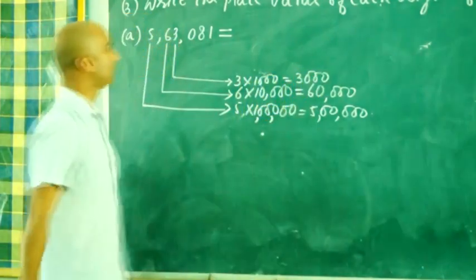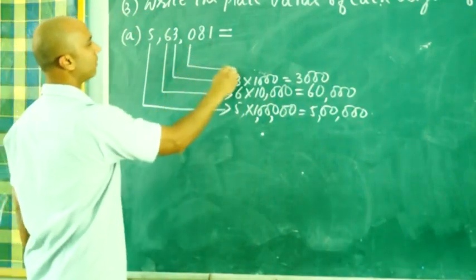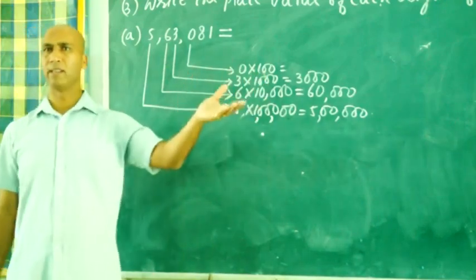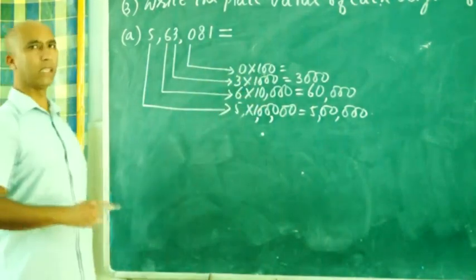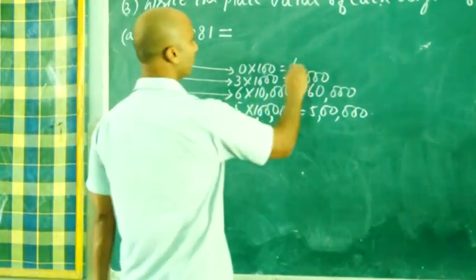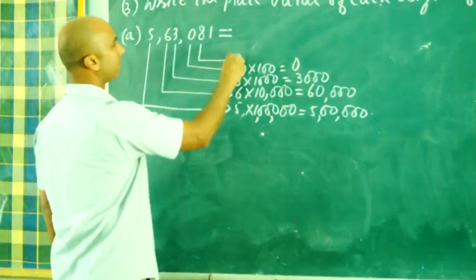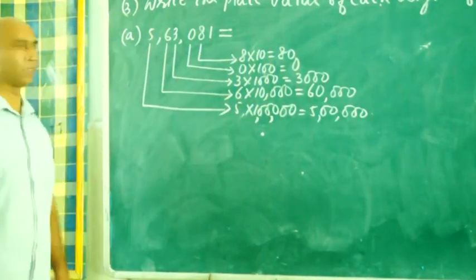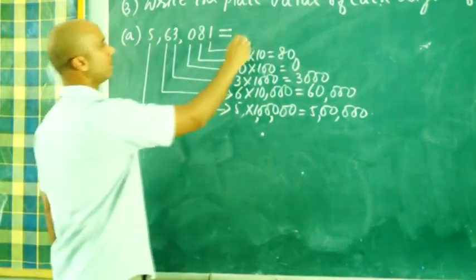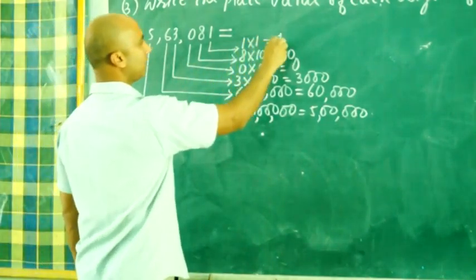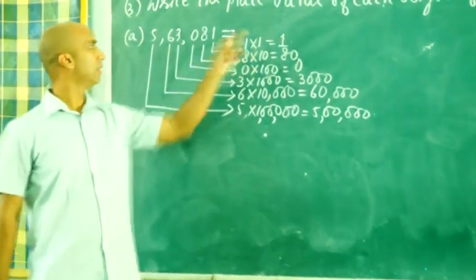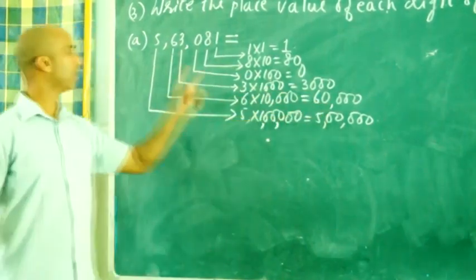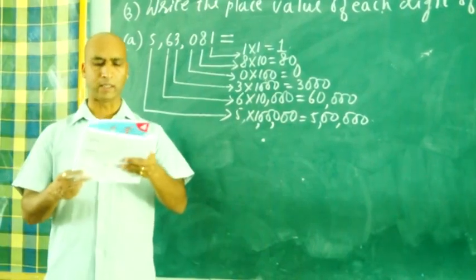Then place value of 0. 0 is in 100 place. So any number multiplied by 0 will be 0. 0 multiplied by any number will be 0. That is why the place value of 0 is always 0. Next is 8. 8 is in 10 space, 8 into 10, that is equal to 80. After that, next is 1. 1 is in 1 space, 1 into 1 is equal to 1. So place value of 5 is 5 lakh, 6 is 60,000, 3 is 3000, 0 is 0, 8 is 80, and 1 is 1.